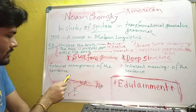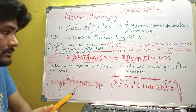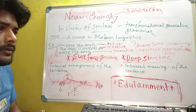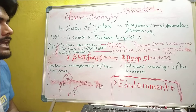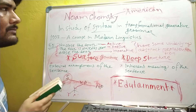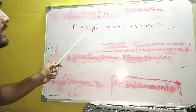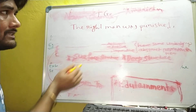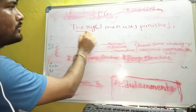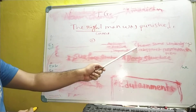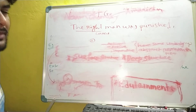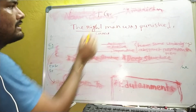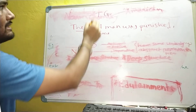I cannot analyze deep structure thoroughly here — it needs another video. Because Noam Chomsky rejected traditional grammar. Why? Because traditional grammar is very ambiguous and does not give a fixed meaning. For example, 'The right man was punished.' What is the meaning? One meaning: the man who is guilty — that exact guilty man is punished. But another meaning is that the man who is correct, the good man, is punished, so the judgment is not correct. So traditional grammar is not reliable, and this is why Noam Chomsky rejected it.